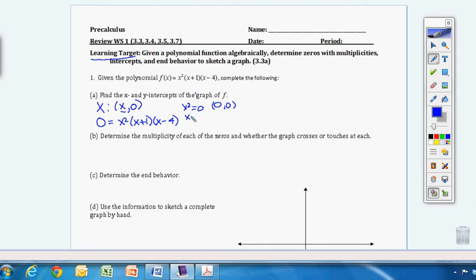And then if I set x plus one equal to zero, then I'm going to have negative one when my y value is zero. And my last factor is x minus four. Set that one equal to zero, so x equals a positive four when again, y was zero.